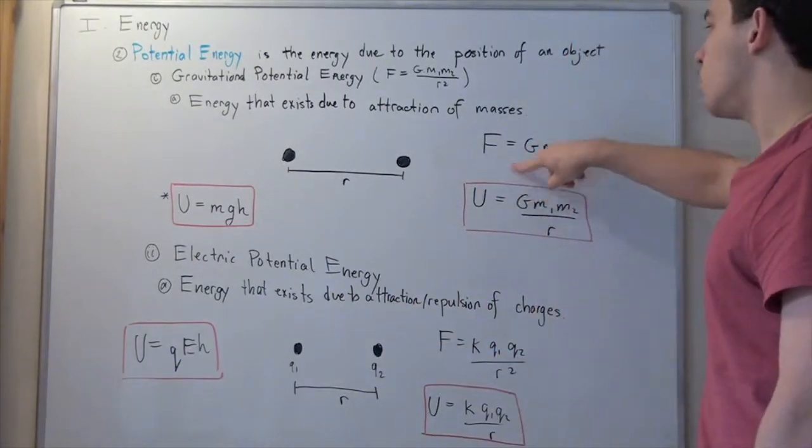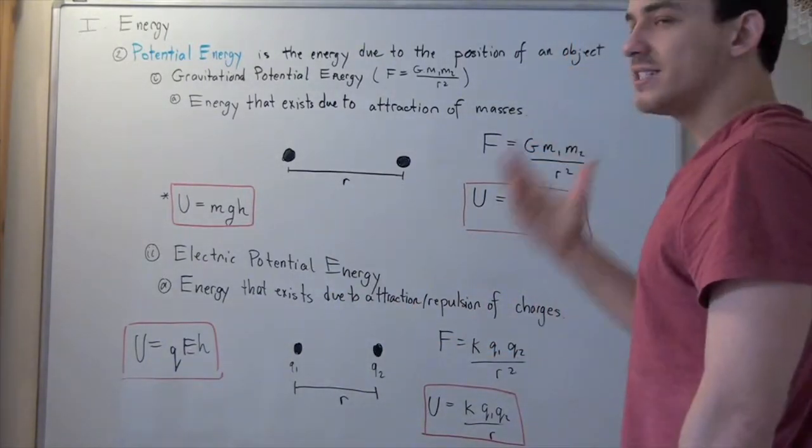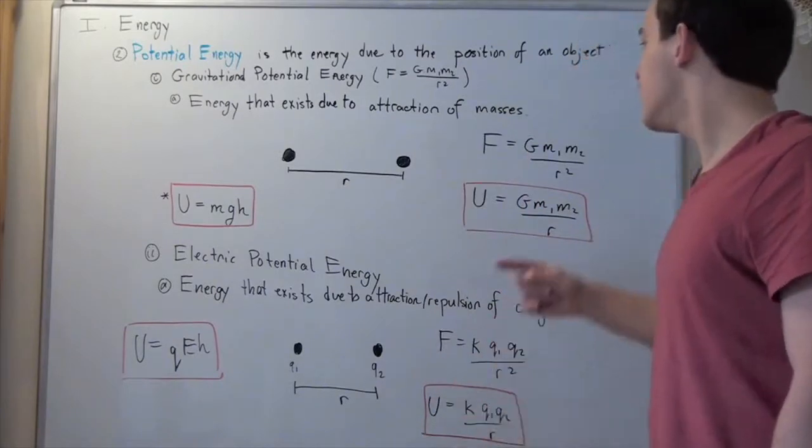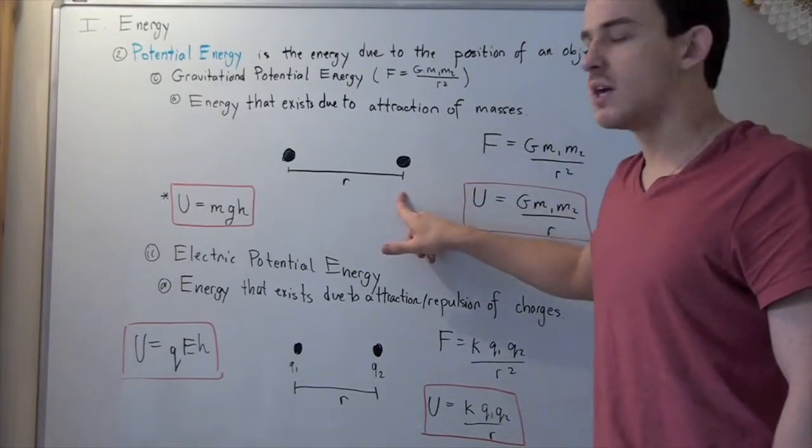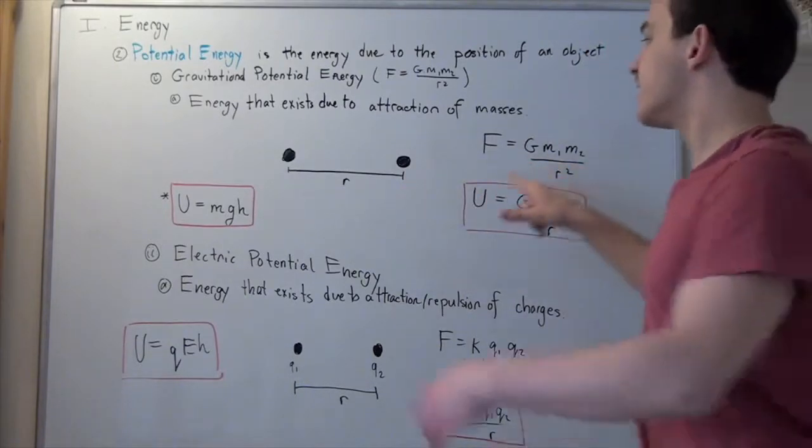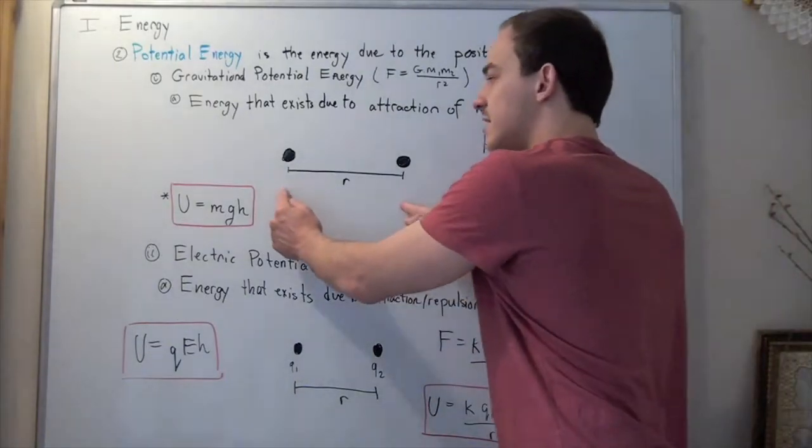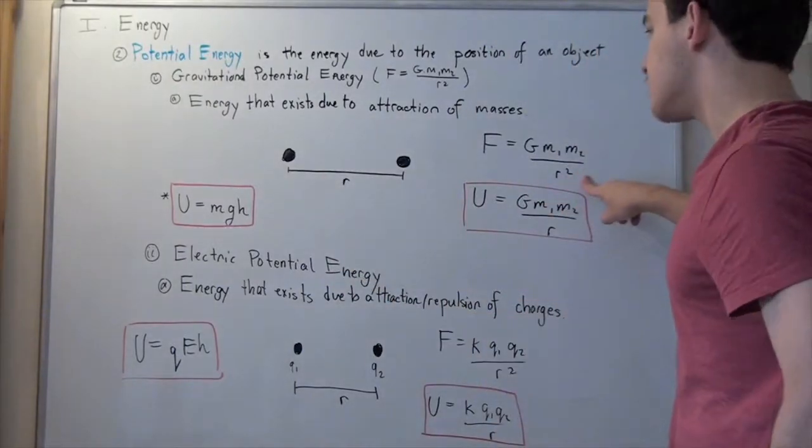Namely, force equals gravitational constant 6.67 times 10 to negative 11 multiplied by mass one in kilograms multiplied by mass two also in kilograms divided by the distance between their center of mass R squared given in meters. Now, remember, force times distance gives you the energy.